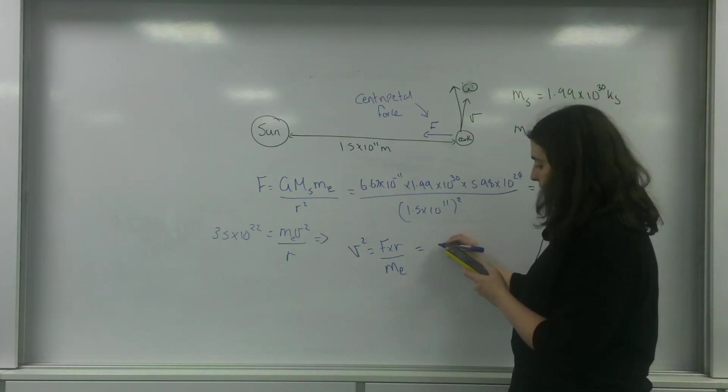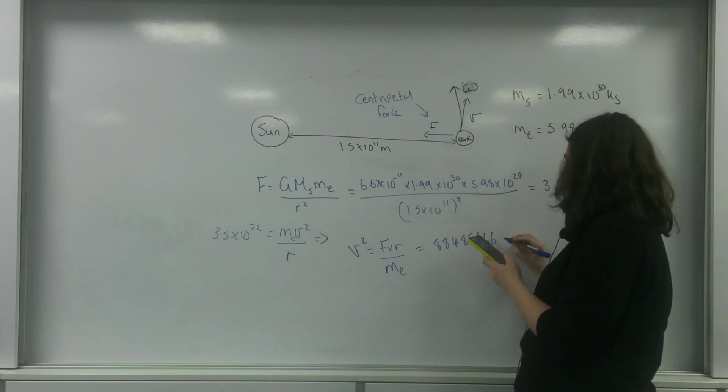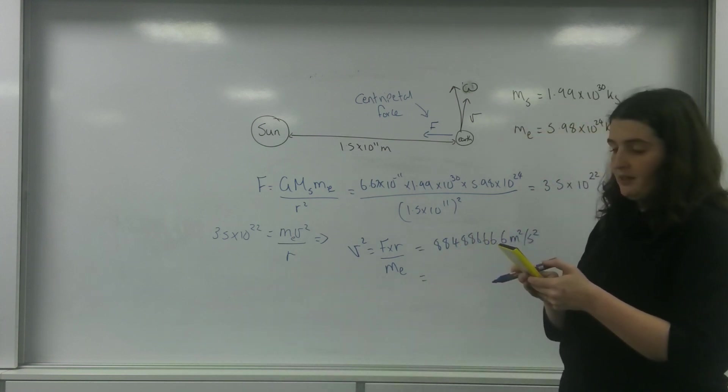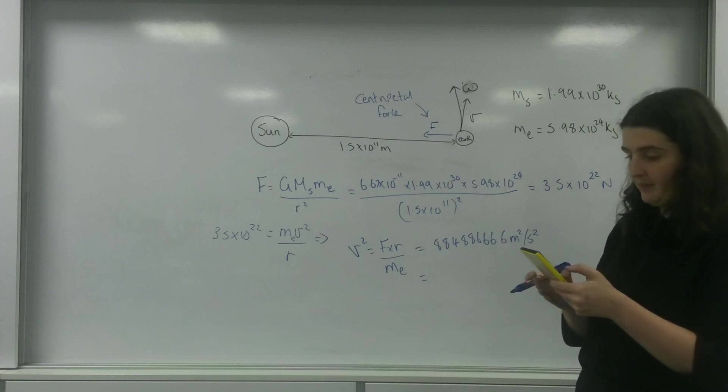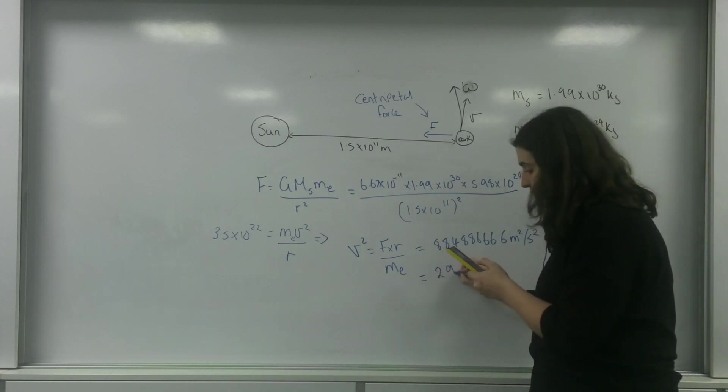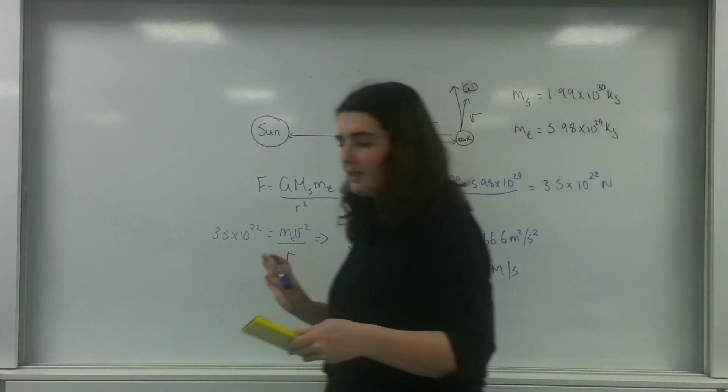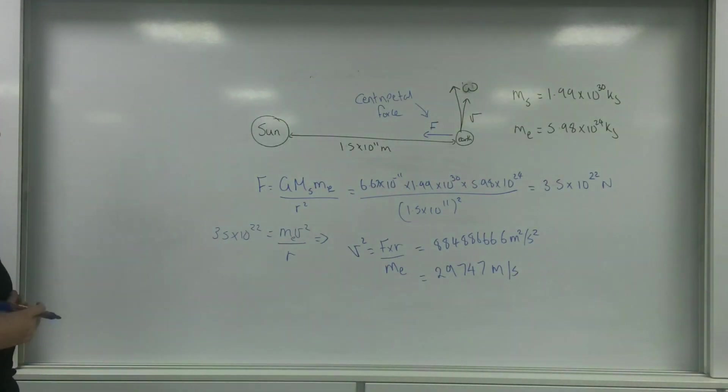So my V squared is 884,866.6 meters squared per second squared. My V is the square root of that, which is 29,747 meters per second. I know that seems fast, but that is the speed we're orbiting at.